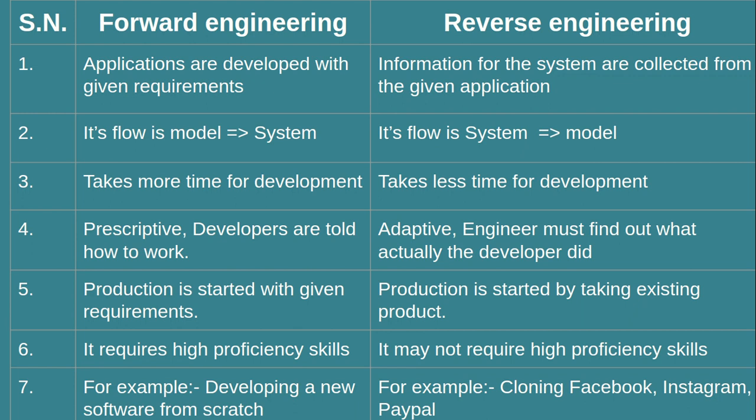In reverse engineering, you look at an existing system, retrieve information from it, and use that for system development. You take the existing system and break it down into smaller components, subsystems, or models. You convert those into something new — essentially starting from an already existing system, breaking it into subsystems and components.